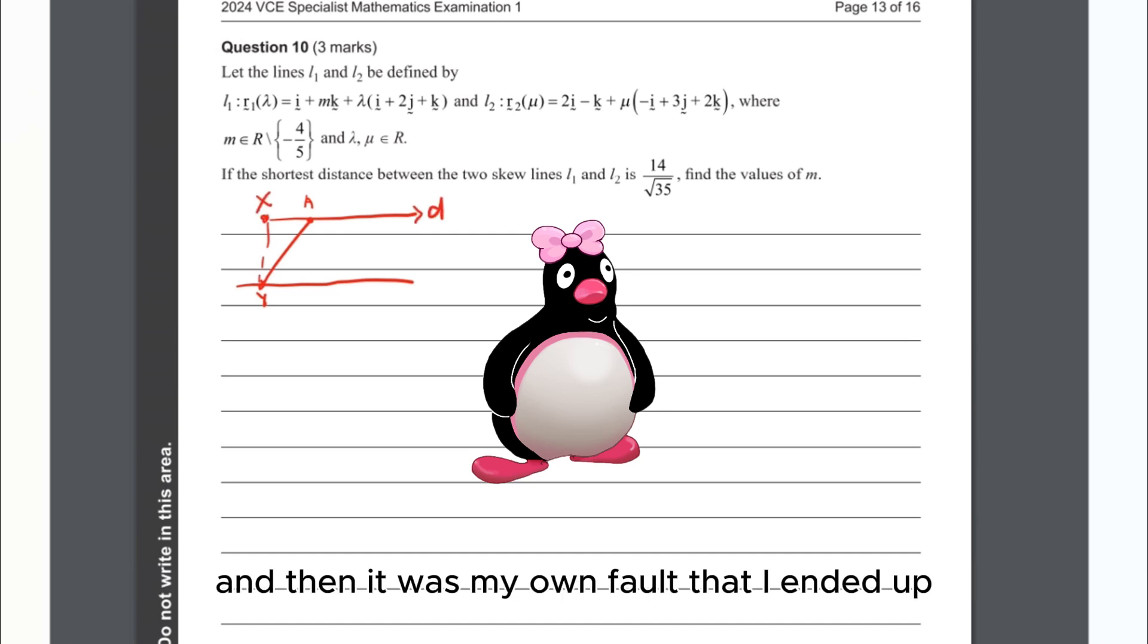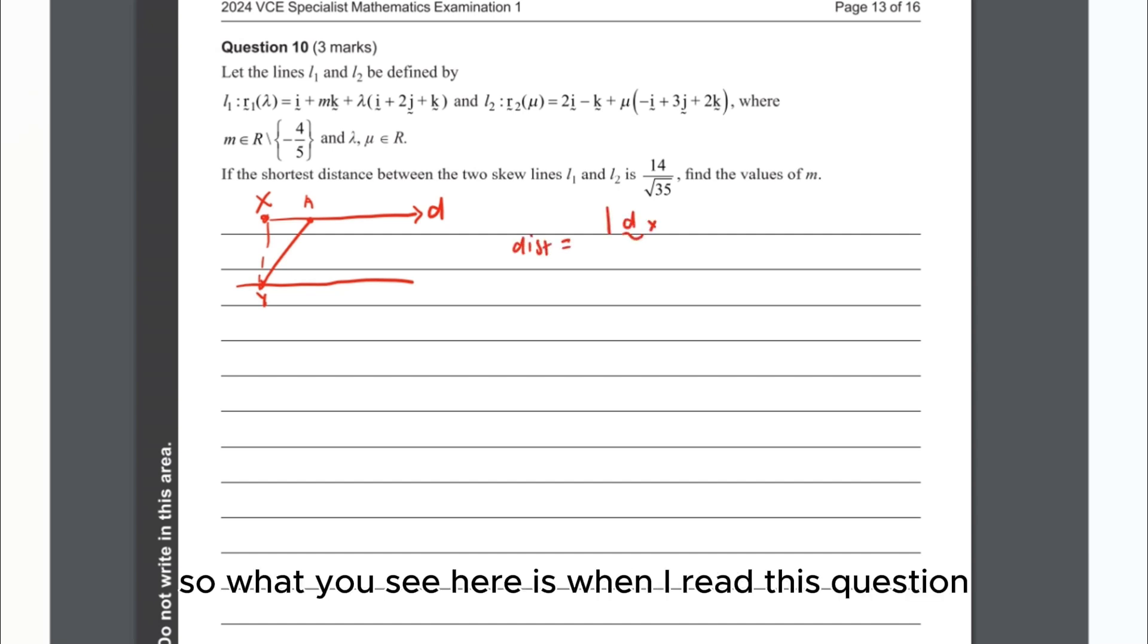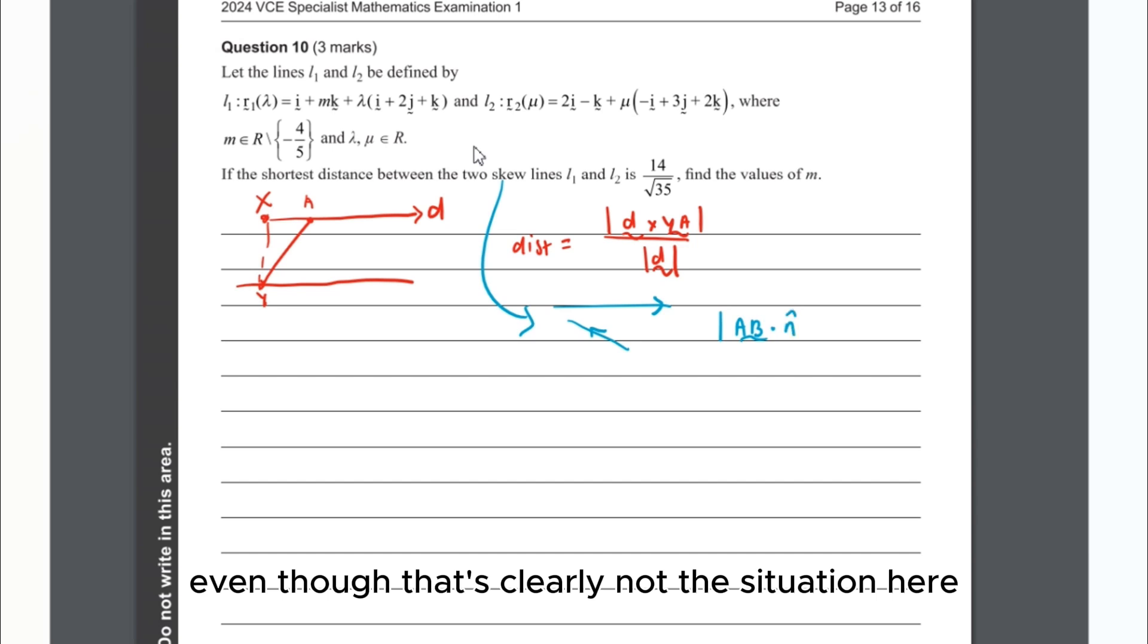Obviously a lot of my classmates were furious at him after leaving the exam. I don't blame him at all because I did actually memorize the distance formulas and then it was my own fault that I ended up not using the right one. When I read this question and I had so much time to read it right, you would think that I would comprehend in my mind that we're talking about 3D skew lines.